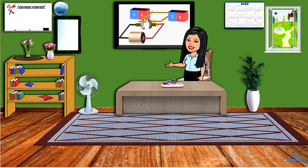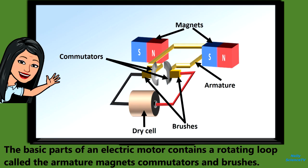Displayed on the screen is the schematic diagram of an electric motor. We have here on the table the improvised model of an electric motor. Take note of the different parts and the function of each part, because after we discuss this, you will make your own electric motor. The basic parts of an electric motor are: a rotating loop called the armature, magnets, commutators, and brushes.